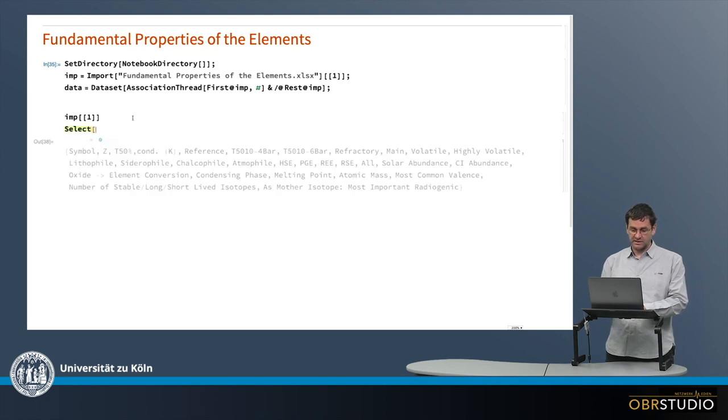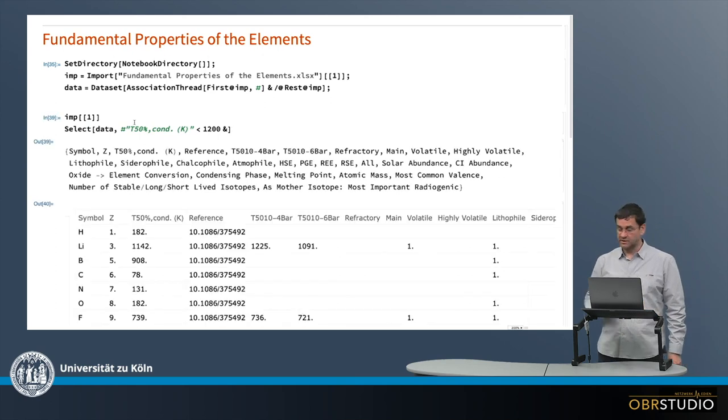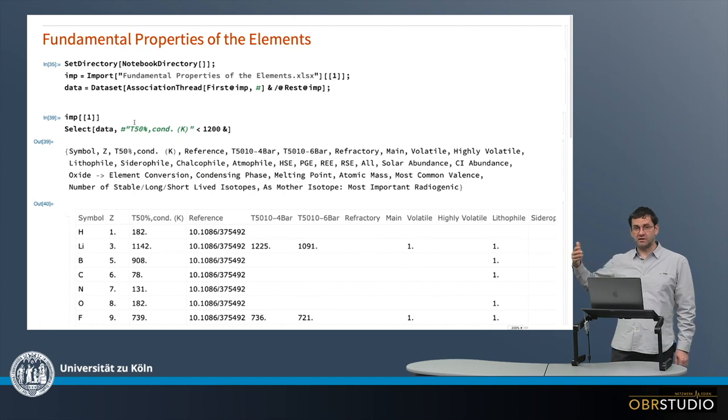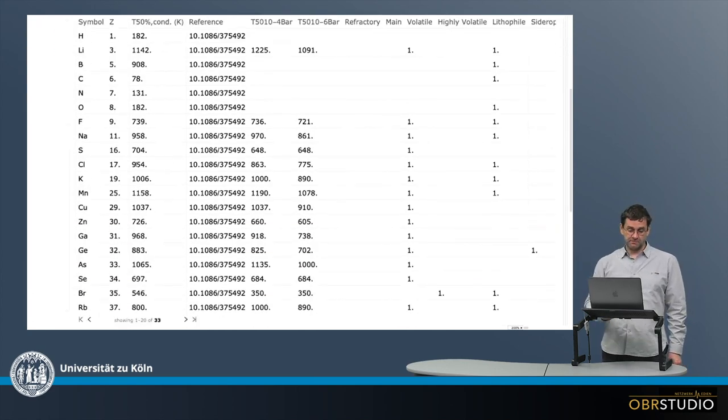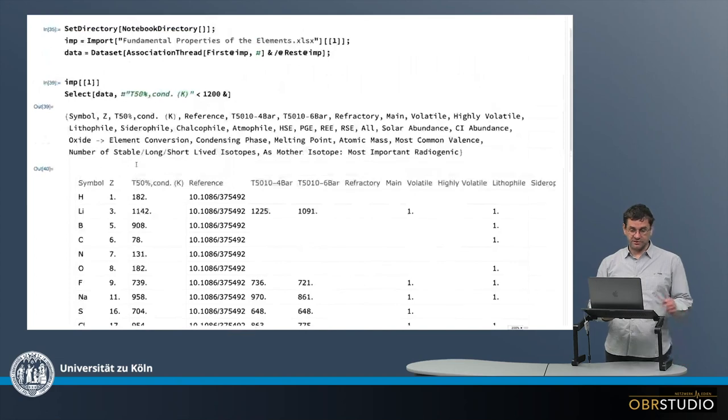And then you can use select from data. For example, I want to select the T 50% condensation temperature and I want to only see elements that condense below 1200 Kelvin. So then I use this command here and I execute it and I get a new table. This table now only contains elements that condense at temperatures below 1200 Kelvin. You can see in this third column there are no temperatures above 1200 Kelvin.